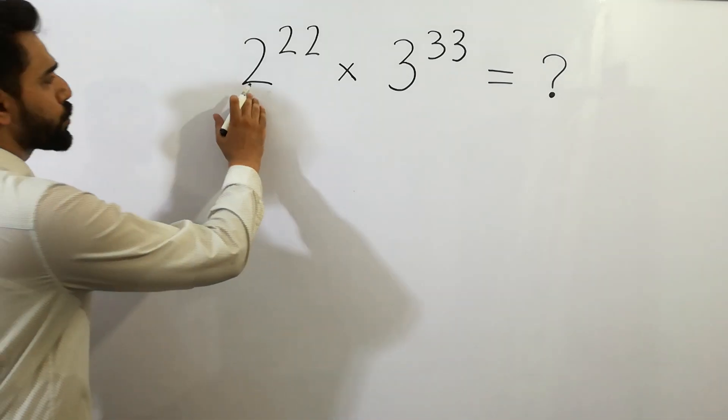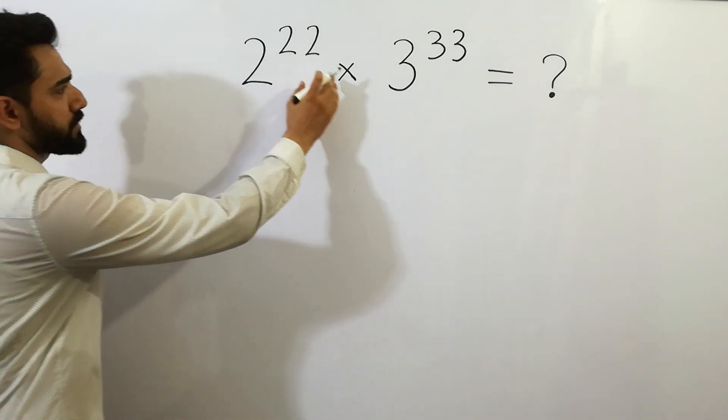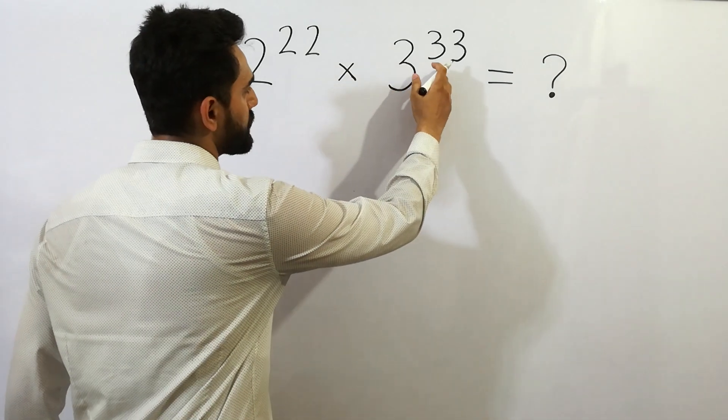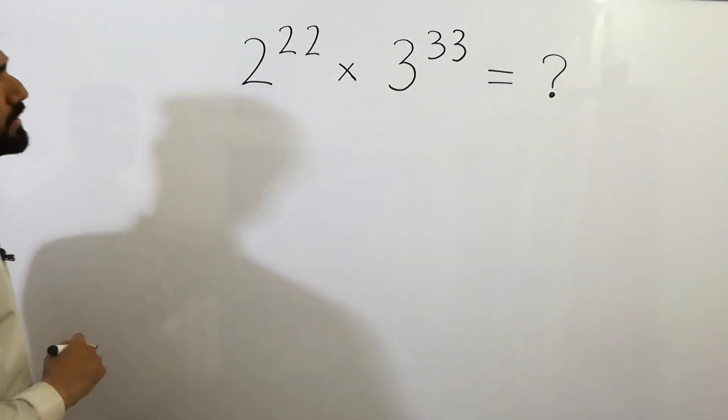Hey guys, 2 to the power 22 times 3 to the power 33 is equal to...